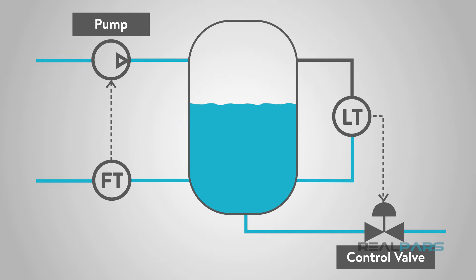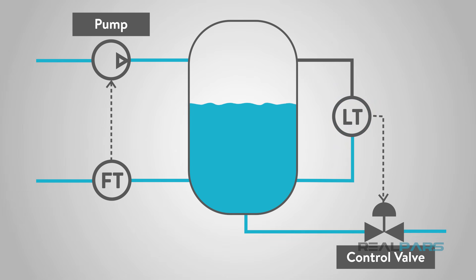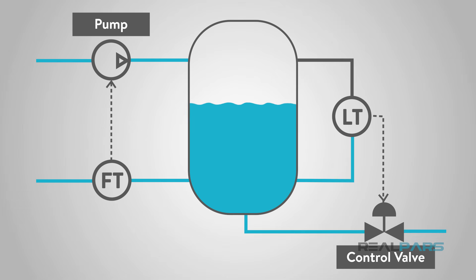When engineers design modern process plants, they specify sensors to measure important process variables, such as flow, level, pressure, and temperature. These measurements are used to help the process control system adjust the valves, pumps, and other actuators in the plant to maintain the proper values of these quantities and to ensure safe operation.